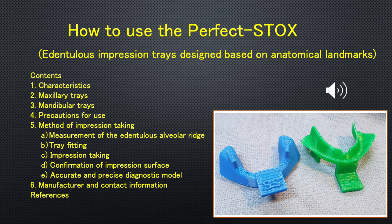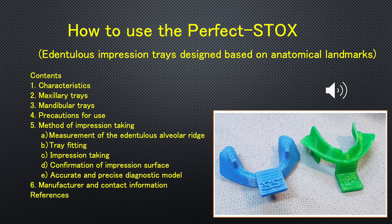Contents: 1. Characteristics. 2. Maxillary trays. 3. Mandibular trays. 4. Precautions for use. 5. Method of impression taking: A. Measurement of the edentulous alveolar ridge. B. Tray fitting. C. Impression taking. D. Confirmation of impression surface. E. Accurate and precise diagnostic model.